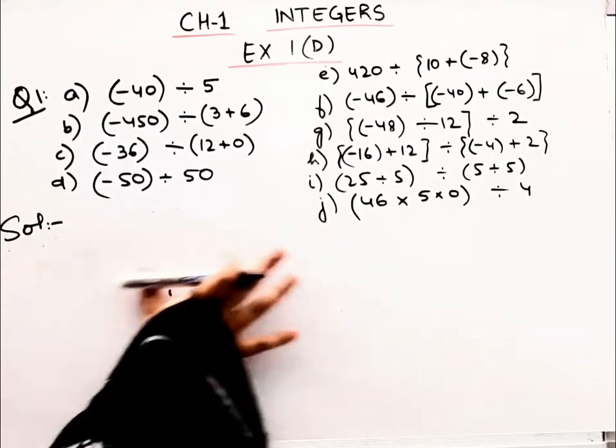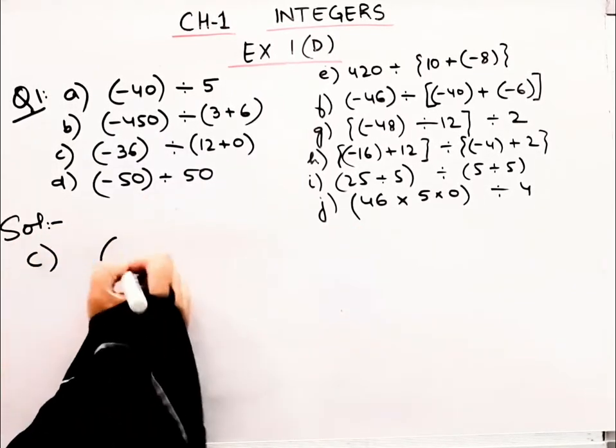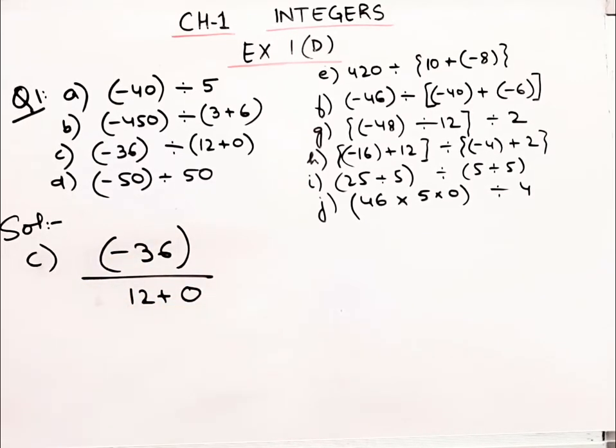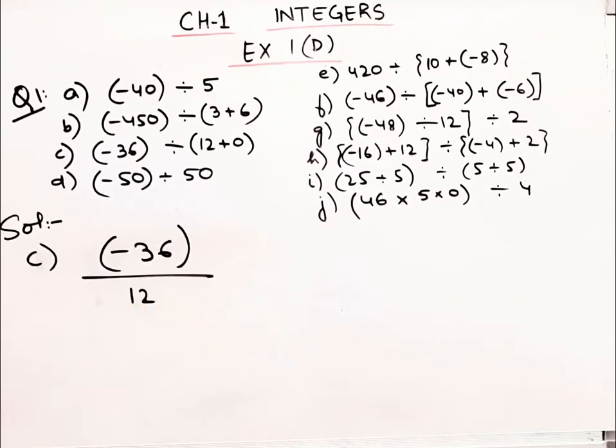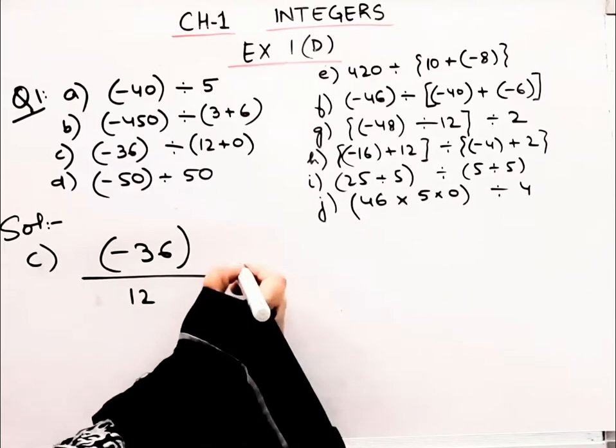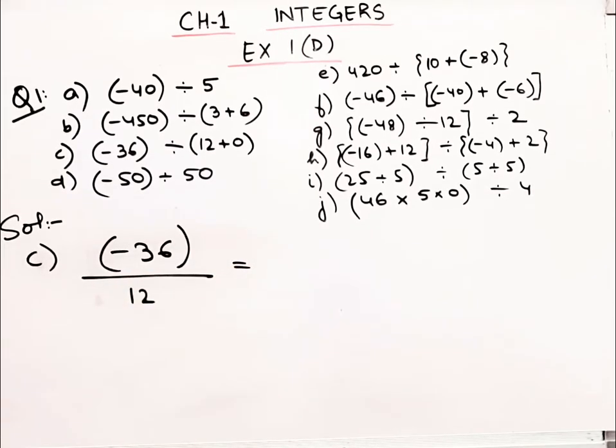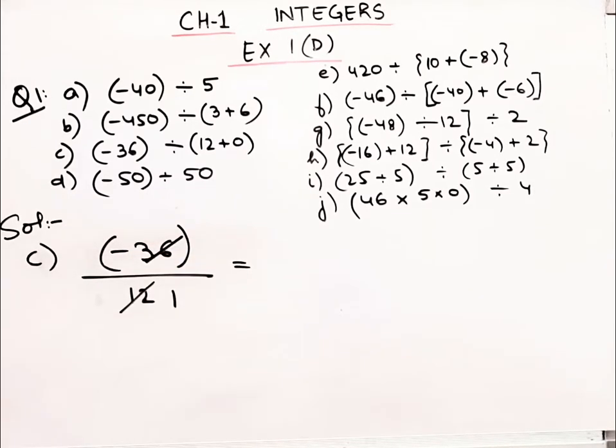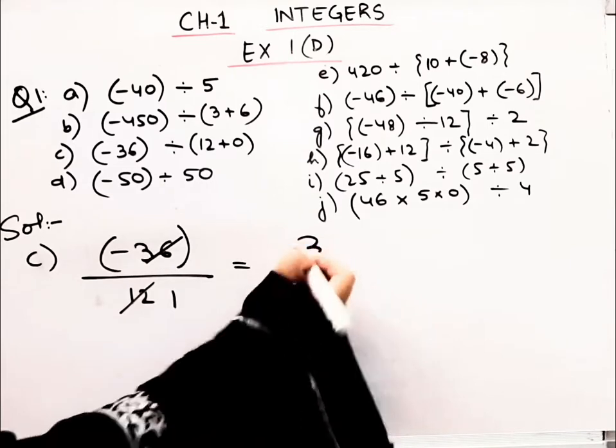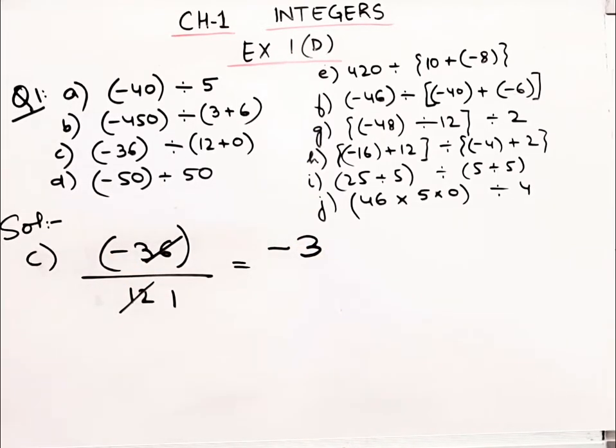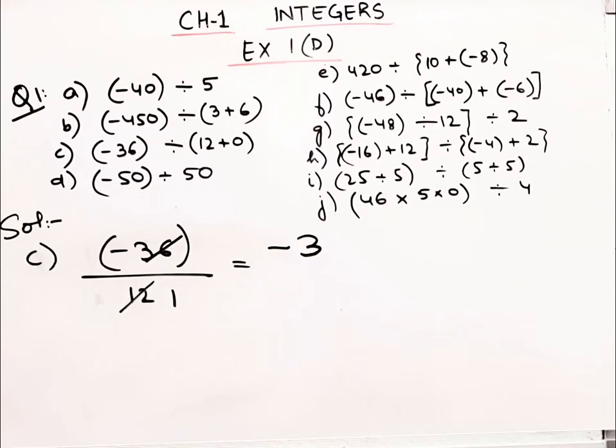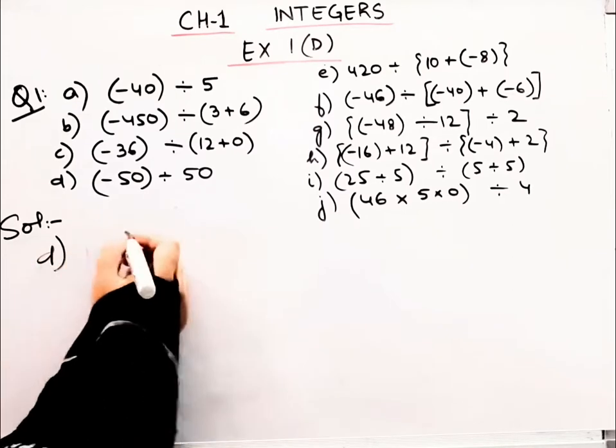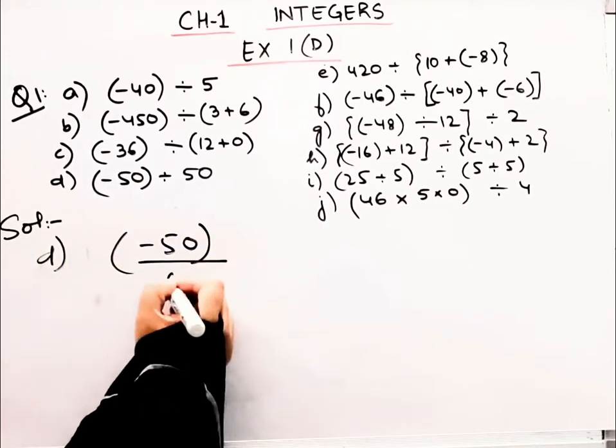Now what is 3 plus 6? This is equal to 9. So minus 350 divided by 9. The answer will be minus 350 by 9. Now let's do the next part, that is your part (c). Here we have minus 36 divided by 12 plus 0. So now 12 plus 0 will become 12.